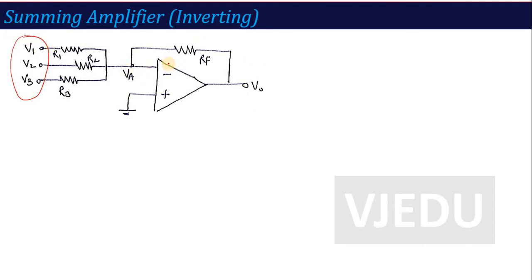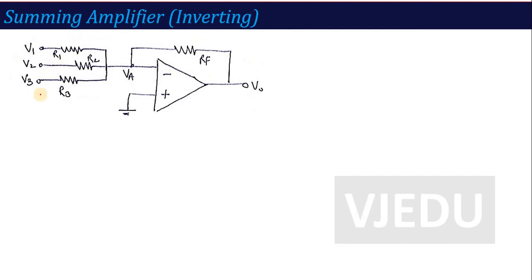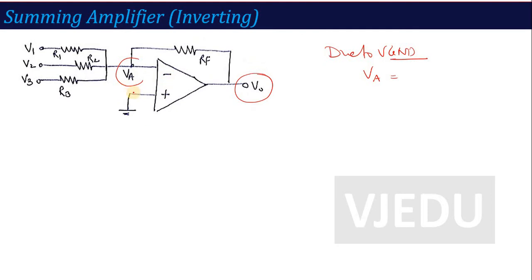Since I am applying this input combination to the inverting input, that's why it is called an Inverting Summing Amplifier. If you move this combination to the positive terminal, it becomes a non-inverting summing amplifier. Now I am going to derive the output voltage. The first step: due to virtual ground, the negative terminal voltage VA equals the positive node voltage, which is ground — that is 0V. So VA equals 0V.